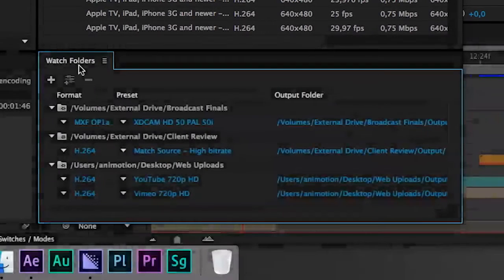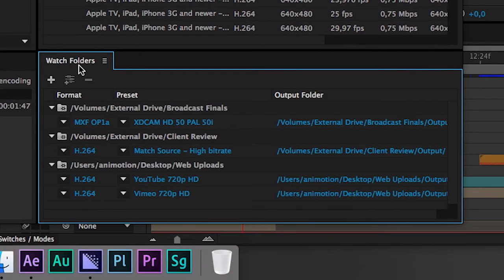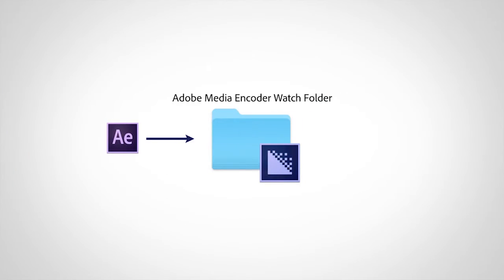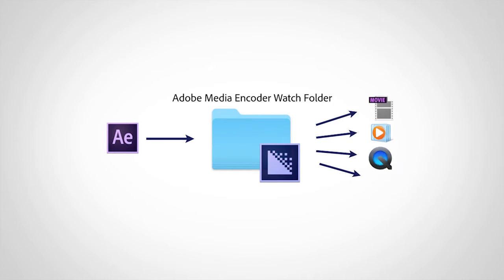But my favorite feature is watch folders. Sometimes it's still desirable to use the After Effects render queue, but Media Encoder supports more formats and is more efficient in creating the various derivatives. When After Effects has rendered a video to a watch folder, it is automatically added to Adobe Media Encoder's queue. Of course, this can be done on a network or a server.